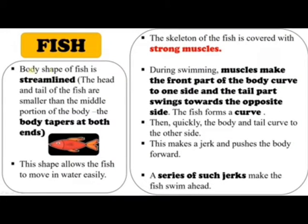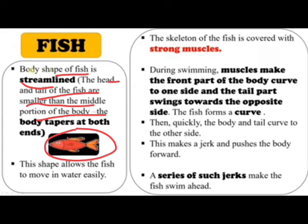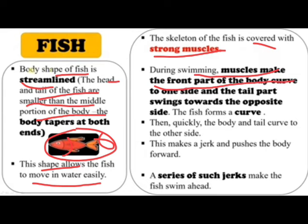Next is the movement of fish. The body shape of fish is streamlined — the head and tail are smaller than the middle portion, allowing the fish to move through water easily. The skeleton of the fish is covered with strong muscles. During swimming, the muscles make the front part of the body curve to one side while the tail swings to the opposite side.